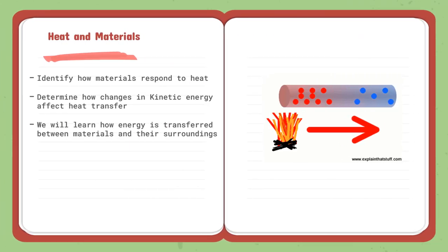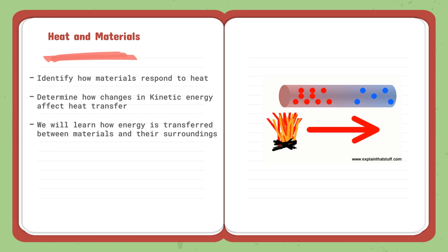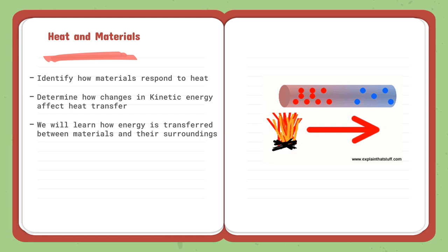As for the third lesson of the second topic, which is heat and materials, we are going to identify how materials respond to heat — what happens when I apply heat to a material, and how kinetic energy determines the change and effect of heat transfer. More movement and more speed affects heat. We will learn how energy is transferred between materials and their surroundings, and how materials can be conductors, which conduct electricity, or insulators, which do not conduct electricity.